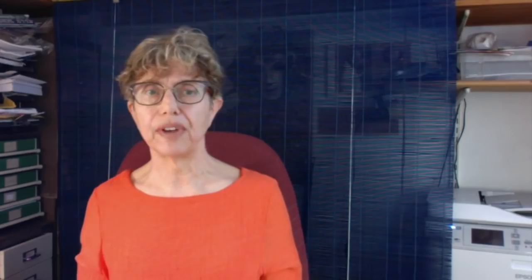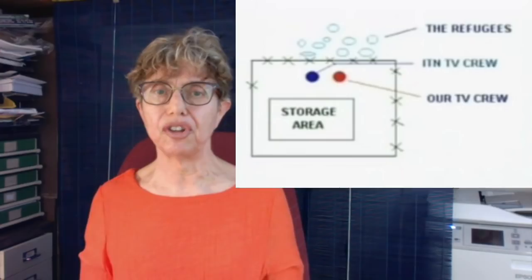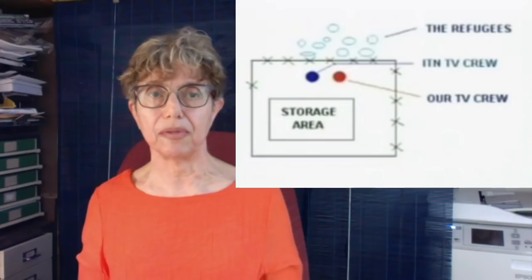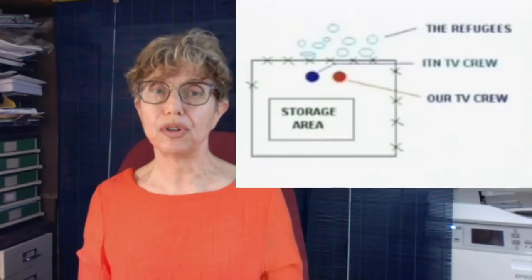The reporters found a wired-off compound with most of the wire broken, which, so far as has been ascertained, had been a holding pen for machinery and building materials. The wire had been there originally to stop the equipment from being stolen. The reporters then positioned their cameras inside this holding pen and behind part of the wire fence which was still up. It was from inside this compound they then filmed the camp inmates who were outside the fence.